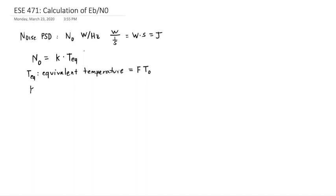K is Boltzmann's constant. You're going to want to remember this because you're going to be using it. It's 1.38 times 10 to the minus 23rd, and the units are joules per Kelvin.